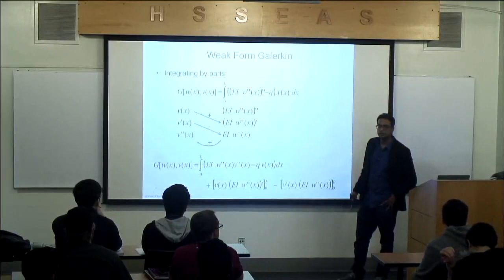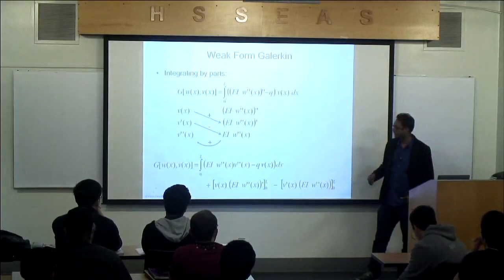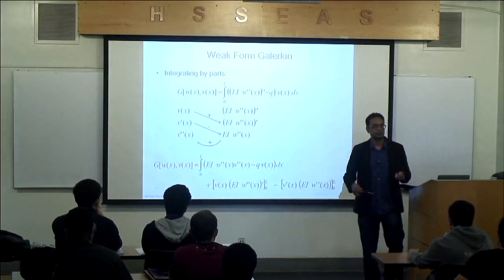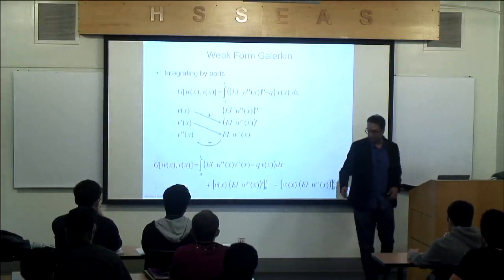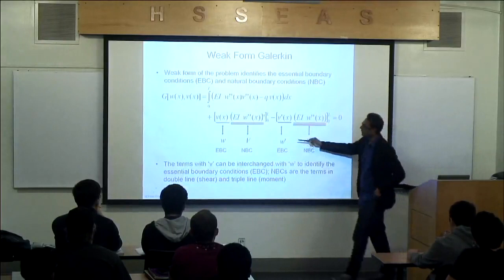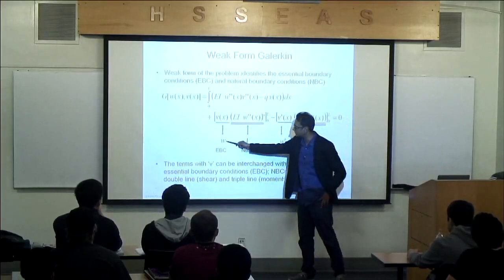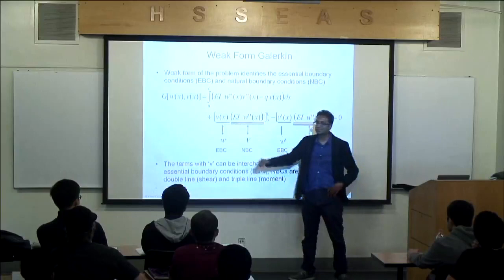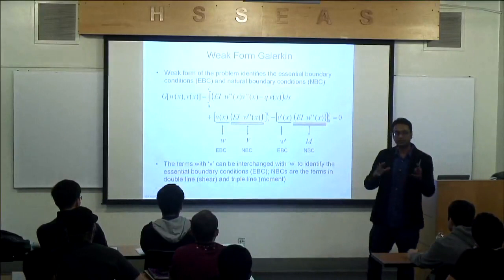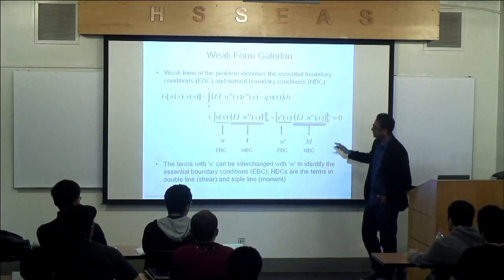From the weak form, we notice that v and v' appear. Focusing on the v terms tells us what the essential boundary conditions are. When v and v' appear, it means that w and w' need to be specified — those are the essential boundary conditions. This term is shear and this is moment. Anything else will be a natural boundary condition.